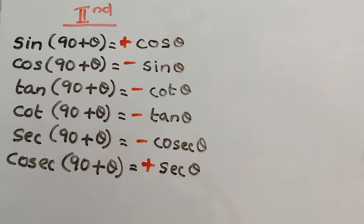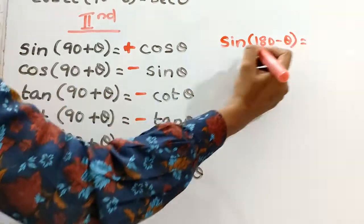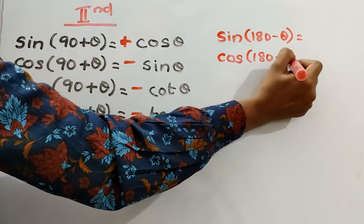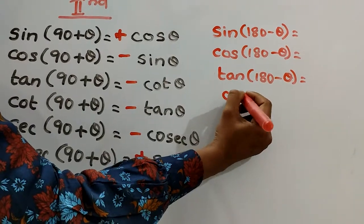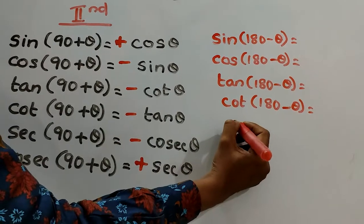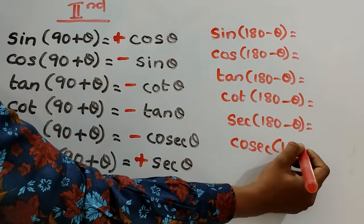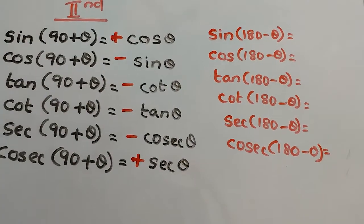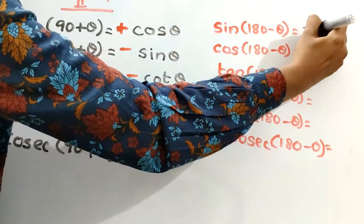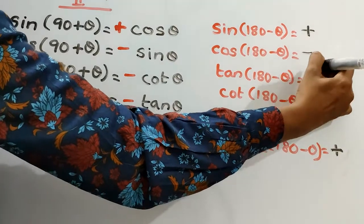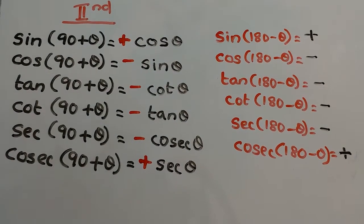One more angle is in the second quadrant: 180° − θ. We need to find sine(180° − θ), cos(180° − θ), tan(180° − θ), cot(180° − θ), and sec(180° − θ). This is the second quadrant, so only sine and cosec are positive, and the remaining are all negative. 180 is an even multiple of 90, so don't change the trigonometric ratio.